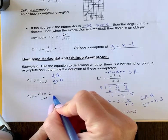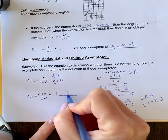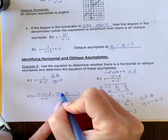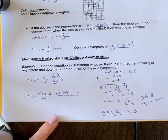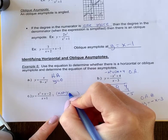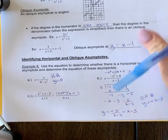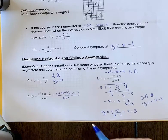First, let's check if this factors. If you can factor and cancel, then you don't have that oblique asymptote. When we factor this, we get (x+2)(x-1) over (x+1). They don't cancel, so we can go ahead and do our division to find the asymptote.